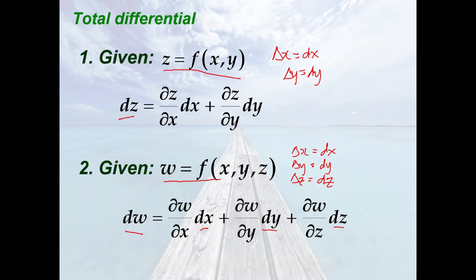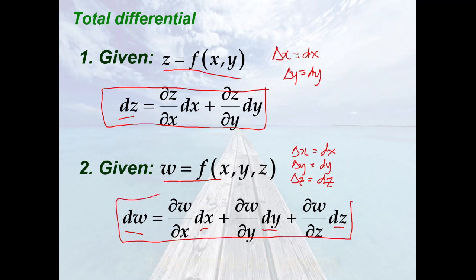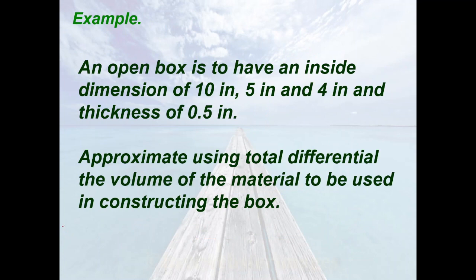Please remember these equations. Now let's have an example. An open box is to have inside dimensions of 10 inches, 5 inches, and 4 inches, and a thickness of 0.5 inch. Approximate, using total differential, the volume of the material to be used in constructing the box. Here we have an illustration of the box.